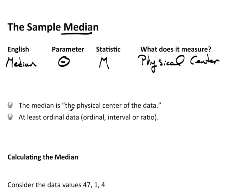Now the median is the physical center of the data, and you need at least ordinal data. In reality, the median for ordinal data really doesn't make a lot of sense. It kind of does, but to me it's very awkward, and I usually stick to using the median for interval or ratio. Technically you can do it for ordinal, but it just feels very awkward.